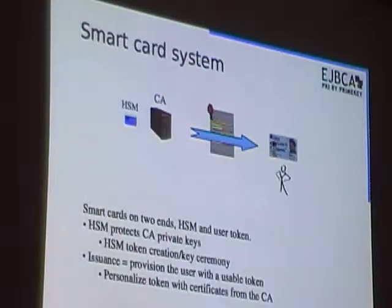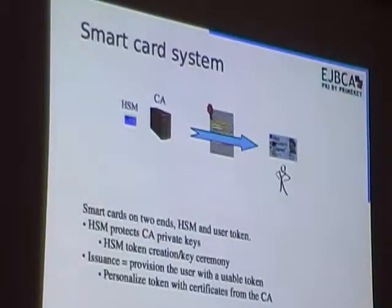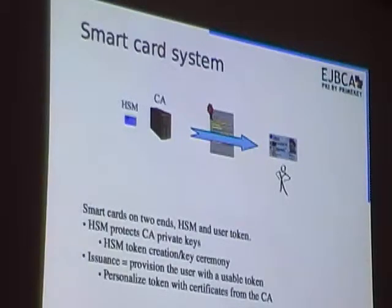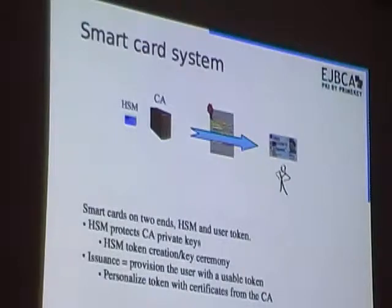In the left end here, we have a hardware security module for a certificate authority. This can either be a 25,000-euro hardware box from SafeNet or nCipher or something, or you can also use a smart card with OpenSC and PKCS11 for this as well. And on the right side, of course, you have thousands or millions of smart cards for the users. In the back end, the hardware security module, which can be a smart card, protects the certificate authority's private keys so they can't be copied by someone who breaks into the server. This also requires a lifecycle management for this particular token, and you have to have some sort of key ceremony to generate it in a controlled way.